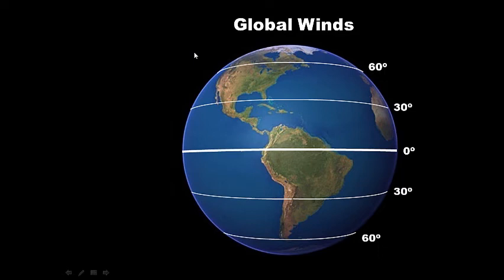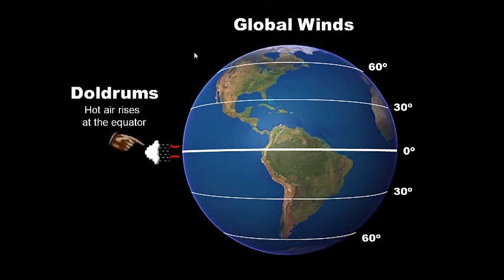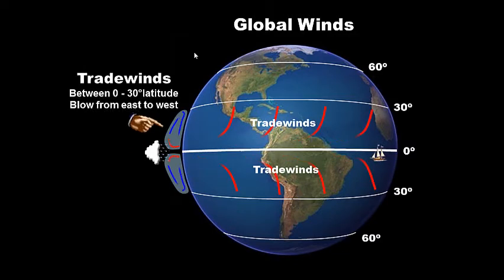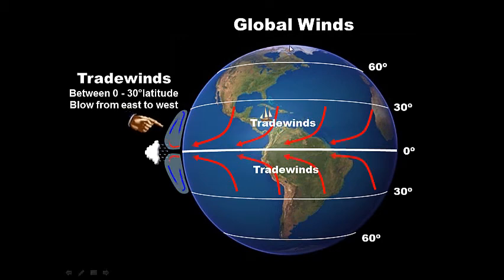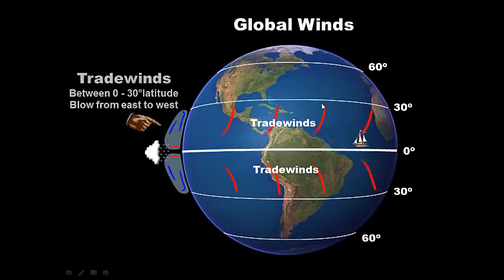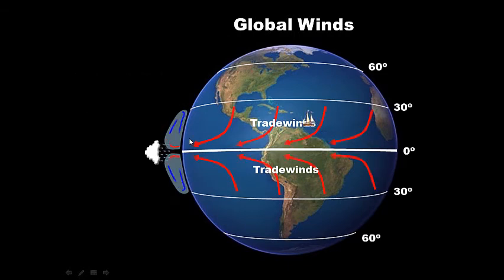Let's throw some latitude lines on there. At the doldrums, hot air rises at the equator because areas near the equator are heated the most — that hot air quickly rises, creating a region of stormy weather right around the equator. Between 0 and 30 degrees latitude are the trade winds. Notice they are deflected to the right in the northern hemisphere and to the left in the southern hemisphere, with their path moving roughly east to west, circulating across the planet.